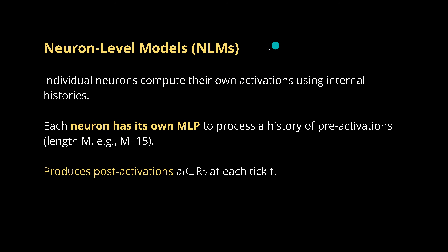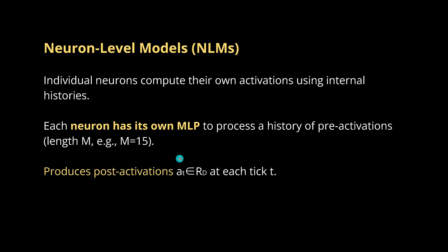Looking at the neuron models: they can compute their own activation function using internal history. We have an additional time dimension, so each neuron has its own multi-layer perceptron to process a history of pre-activations up to a certain length — say 5, 10, or 15 steps. This MLP produces the post-activations at each tick t.